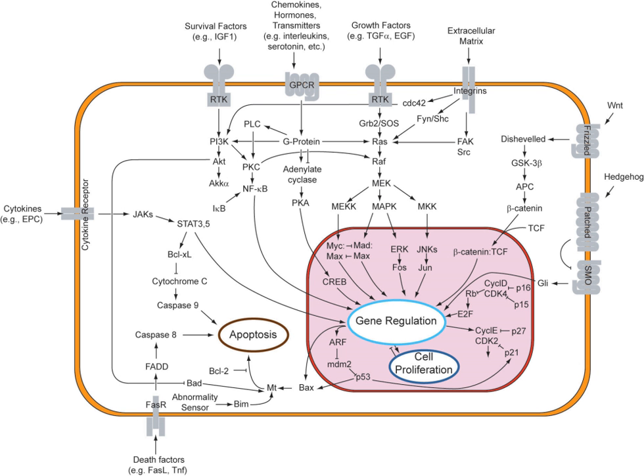Some cell-cell communication requires direct cell-cell contact. Some cells can form gap junctions that connect their cytoplasm to the cytoplasm of adjacent cells. In cardiac muscle, gap junctions between adjacent cells allow for action potential propagation from the cardiac pacemaker region of the heart to spread and coordinately cause contraction of the heart. The notch signaling mechanism is an example of juxtacrine signaling, also known as contact-dependent signaling, in which two adjacent cells must make physical contact in order to communicate. This requirement for direct contact allows for very precise control of cell differentiation during embryonic development.